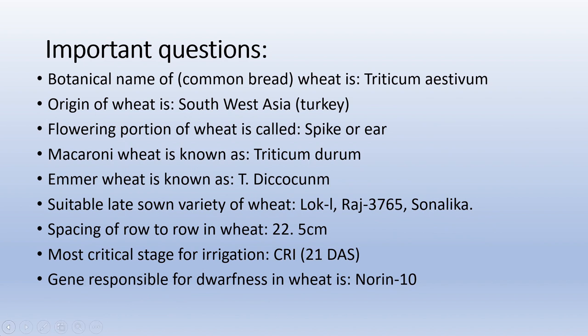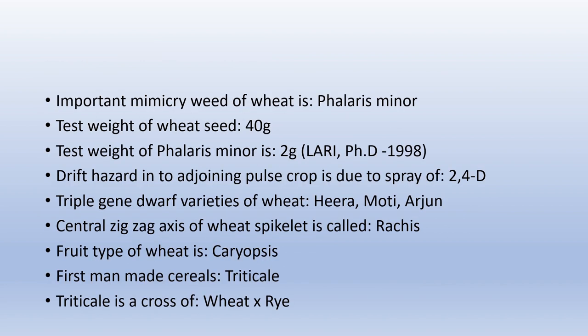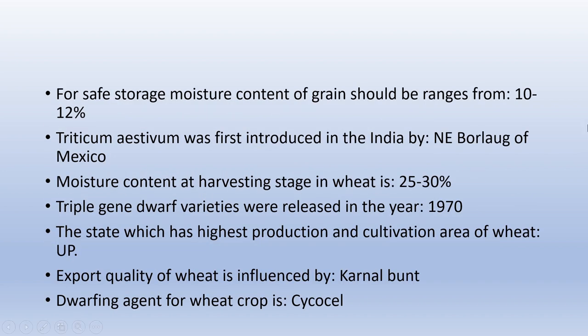Here a summary of what we discussed is given. The PPT will be provided on the Telegram group for revision of important questions covering test weight, fruit type, and mimicry weed. For safe storage, moisture content of grain should be in the range of 10–12%. Triticum aestivum was first introduced in India by N.E. Borlaug of Mexico.